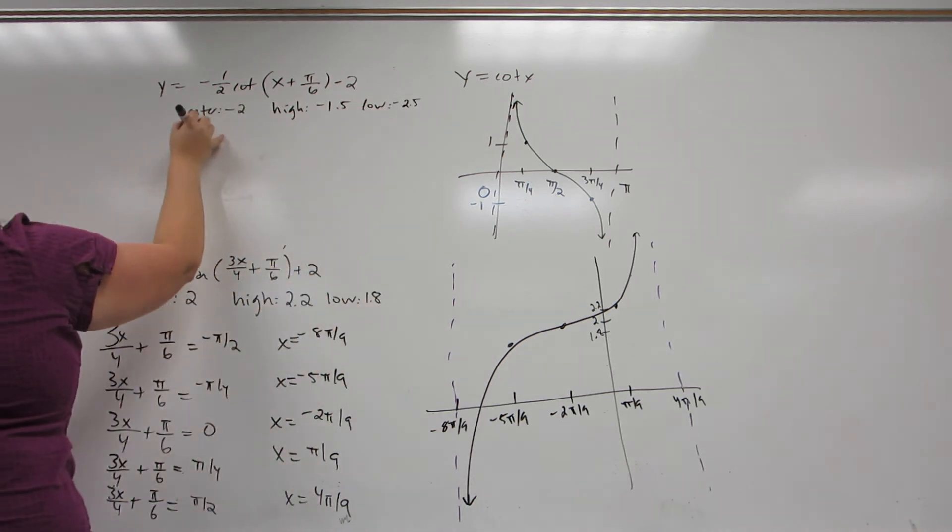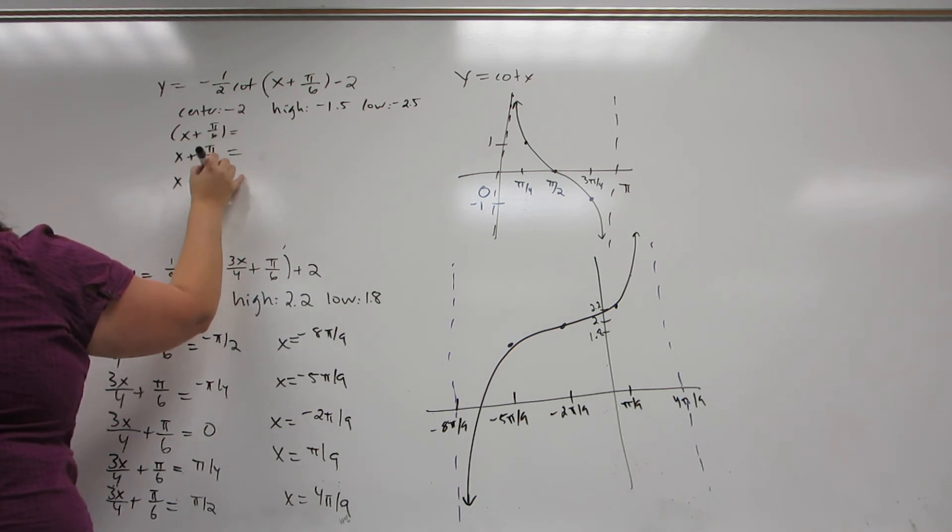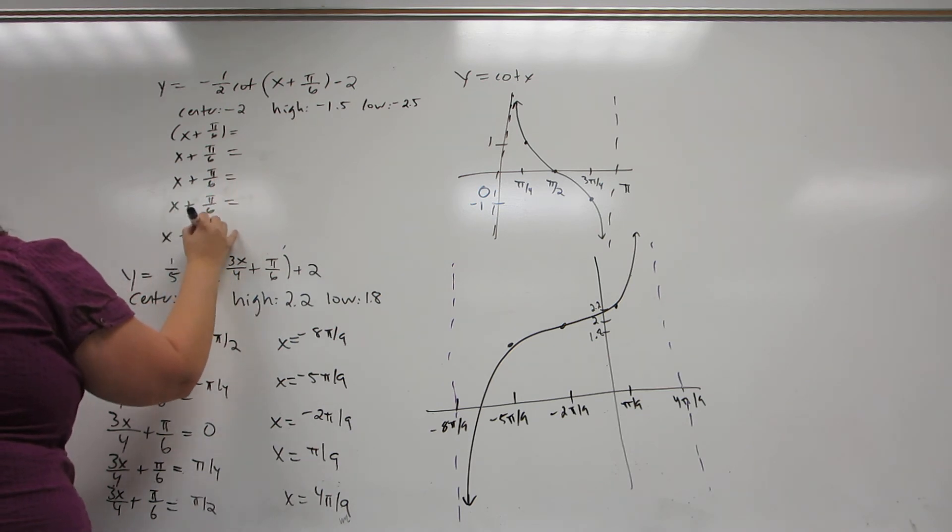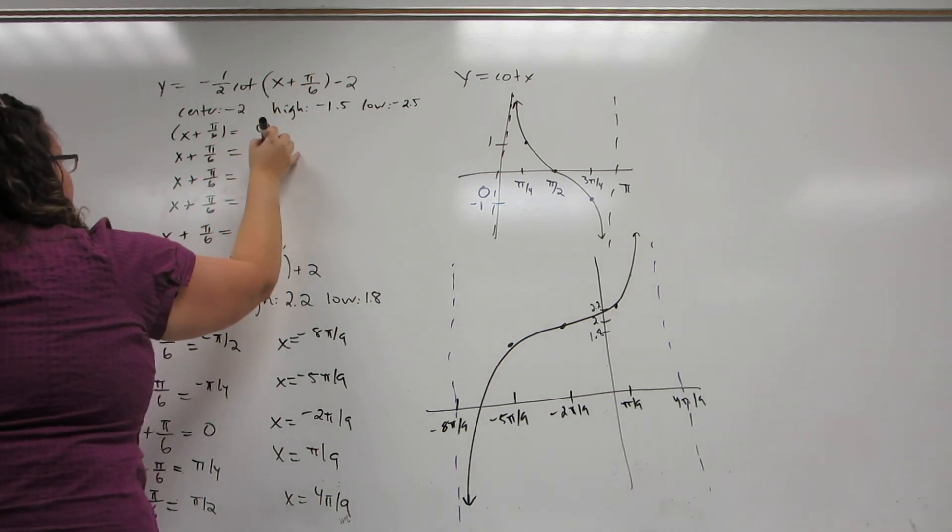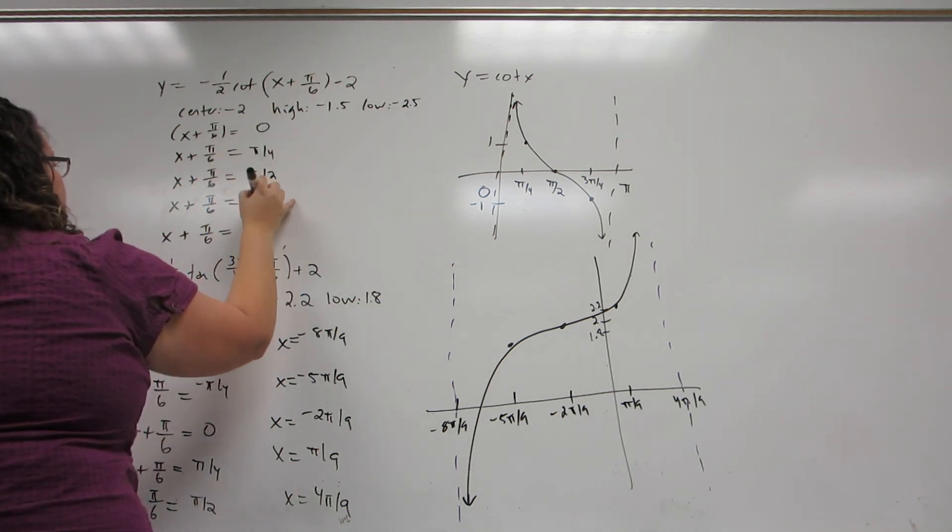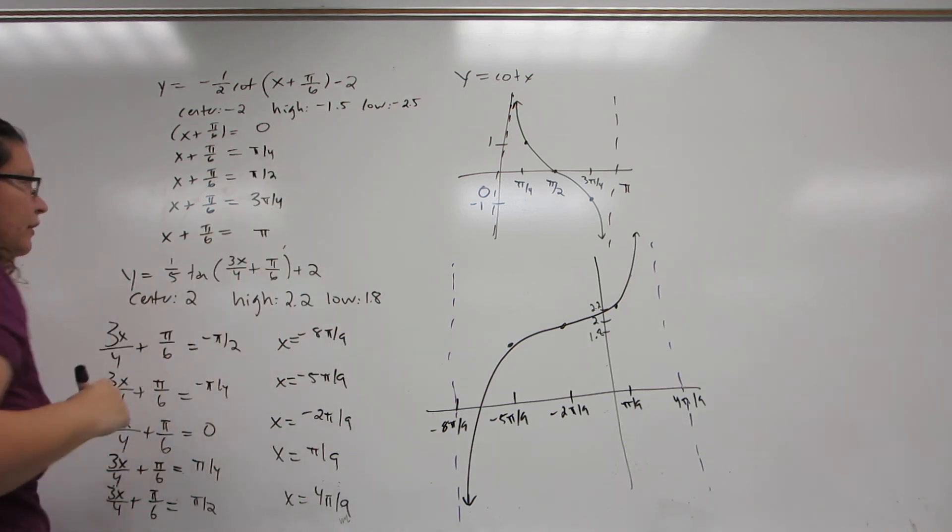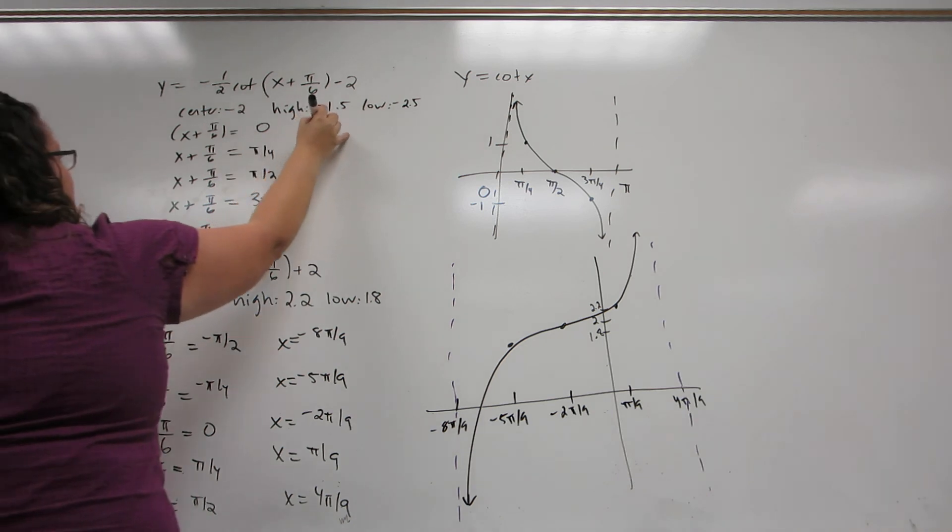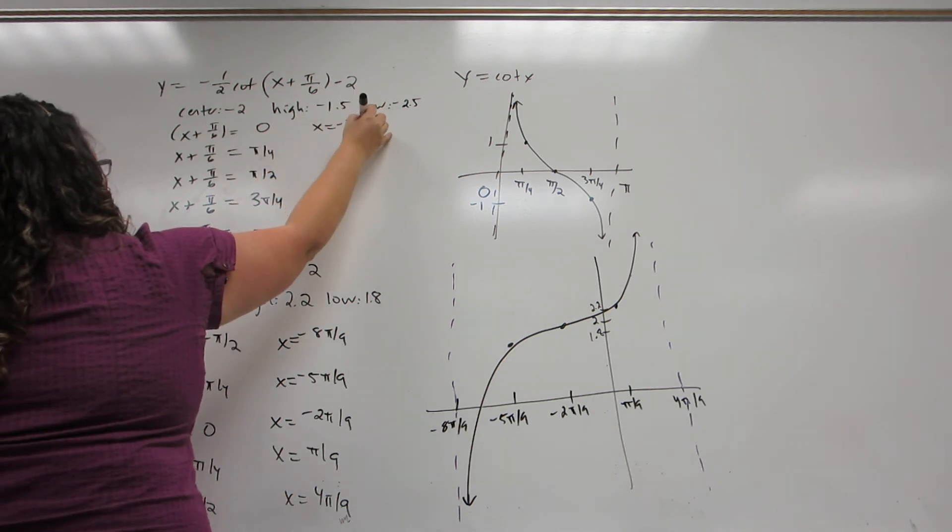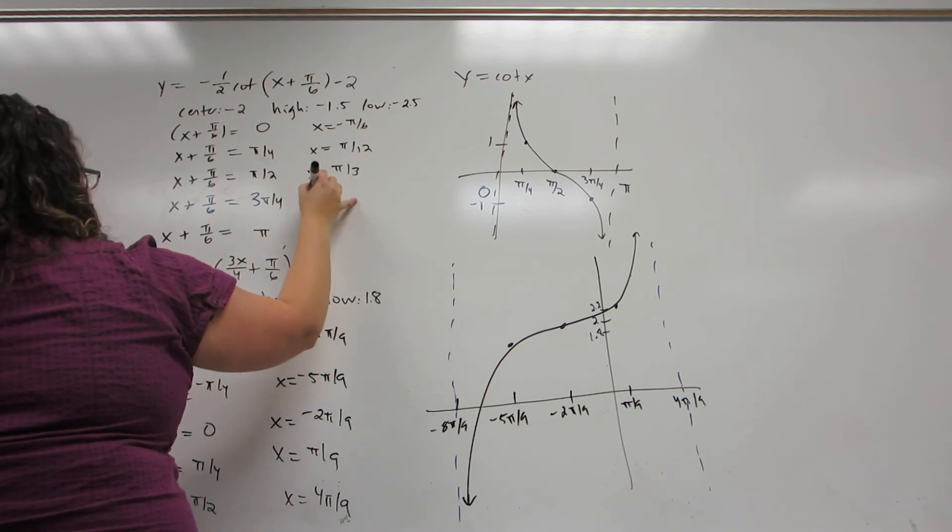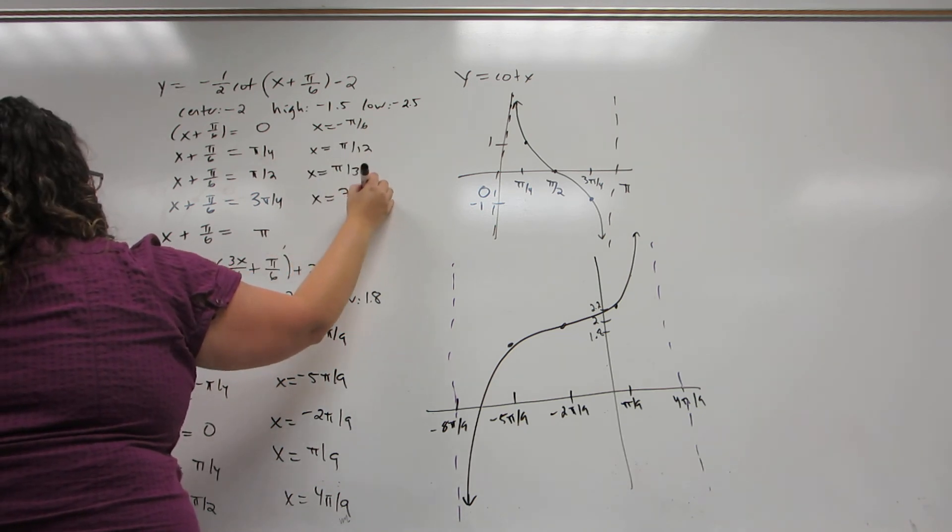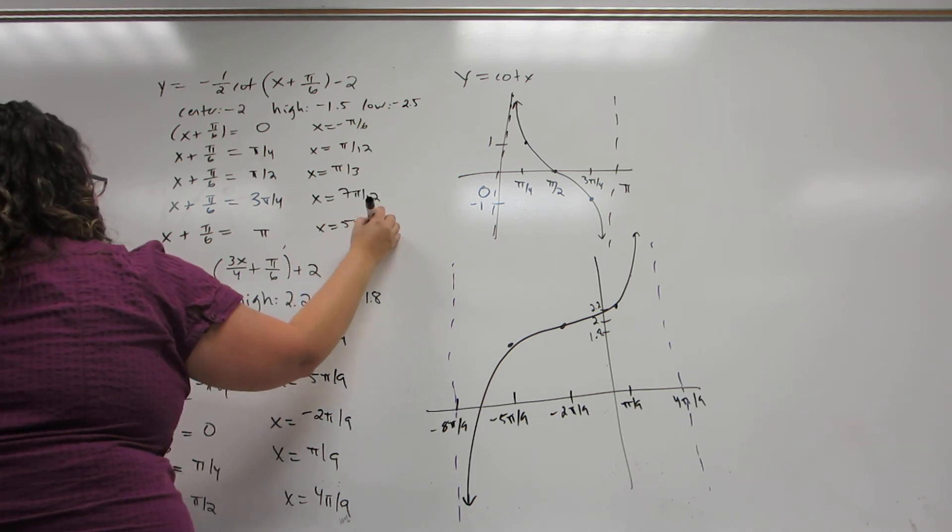I'm going to take the thing inside parentheses and set it equal to the five special points of cotangent. Now the five special points of cotangent are different from even tangent. They are 0, pi over 4, pi over 2, 3 pi over 4, and pi. Again, I solve each of these. I get negative pi over 6, pi over 12, pi over 3, 7 pi over 12, and 5 pi over 6.